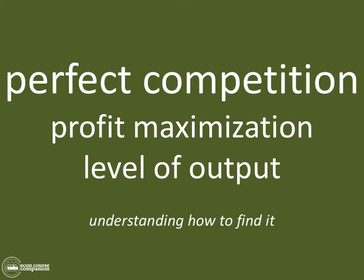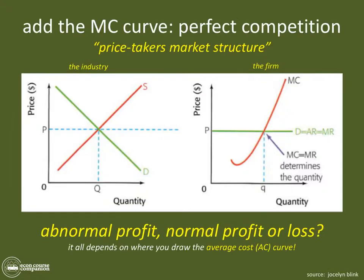We need to know how to show abnormal profit, normal profit, or loss in perfect competition — or frankly in any of the market structures. Let's take a look specifically at perfect competition. We have the price-takers market structure here.